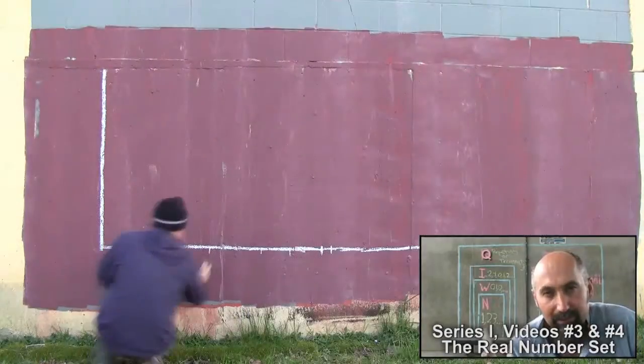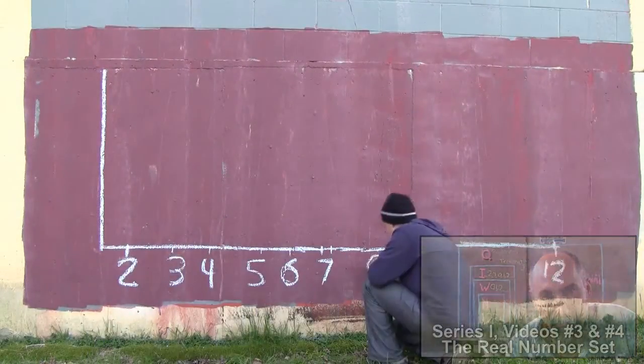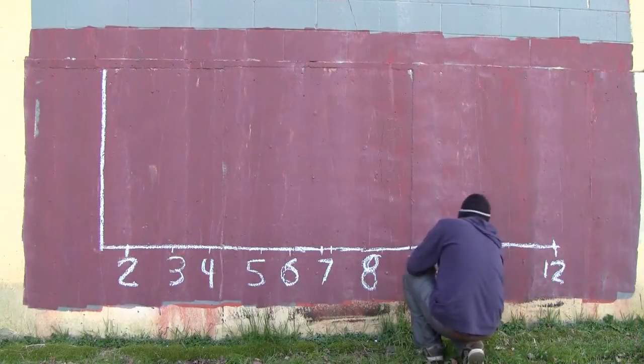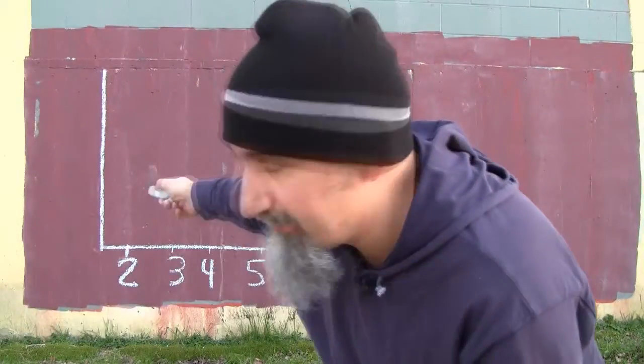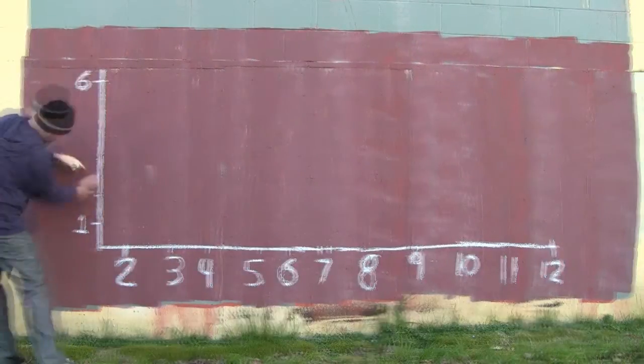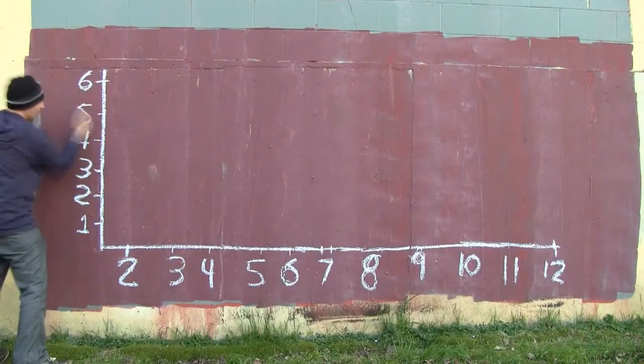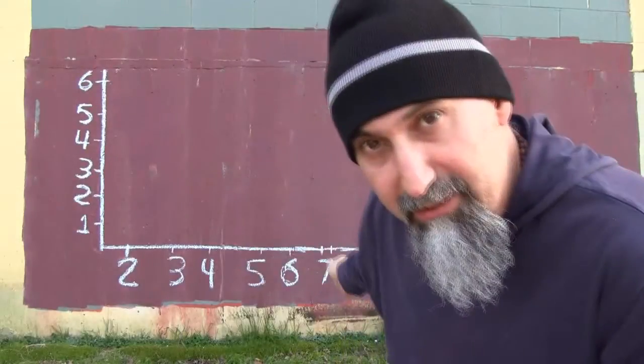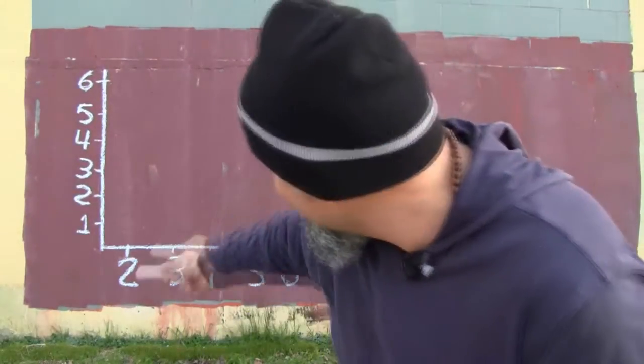The lowest number you can get is a two and the highest is a 12, with counting numbers in between: three, four, five, six, seven, eight, nine, ten, eleven, twelve. On the y-axis, we put the possible outcomes — the different ways we can get each number. The maximum possible outcome is with a seven, which has six ways, and the lowest possible outcome is one way to get a two or a 12.